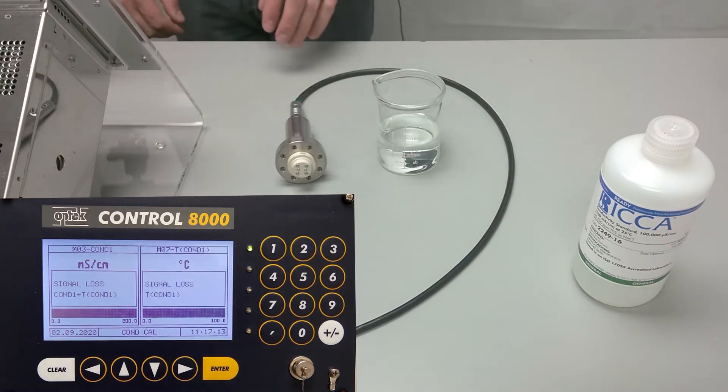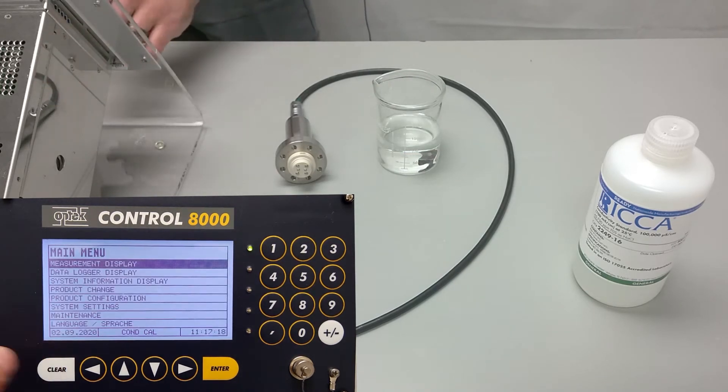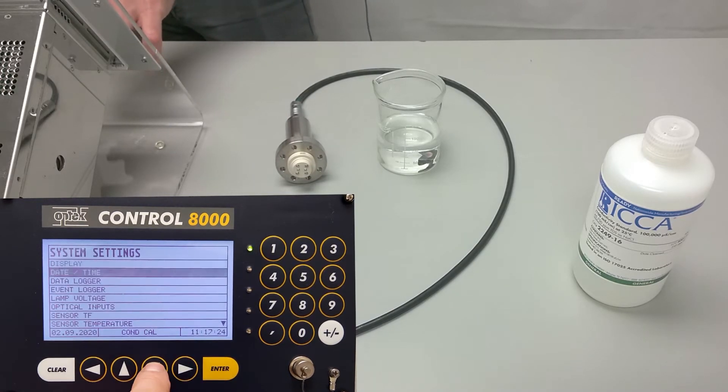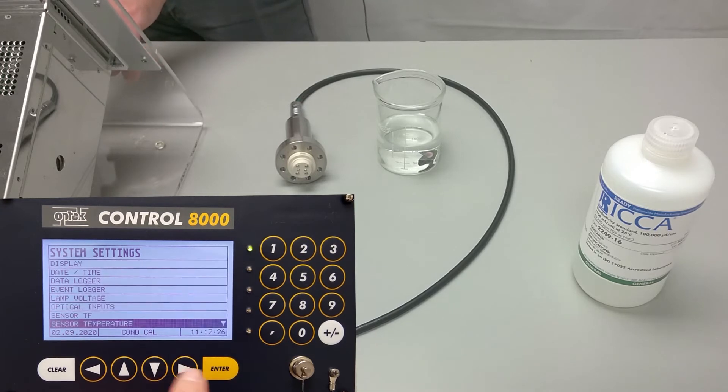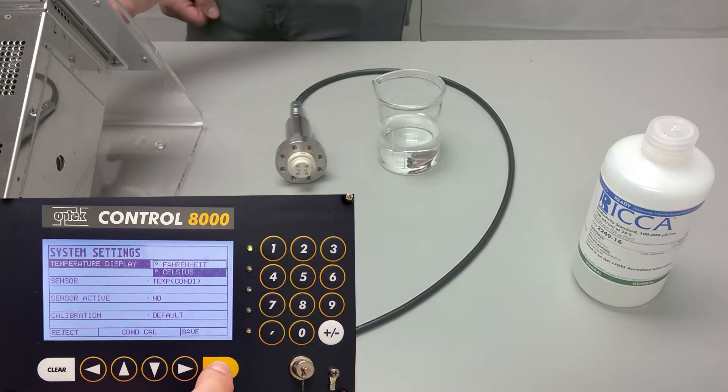The first step is to ensure that the conductivity sensor and temperature RTD probe are set to active. We'll press clear to get to the main menu and scroll down to system settings, scroll down to sensor temperature, and if we wanted to change from Fahrenheit to Celsius, this is where we could do that.